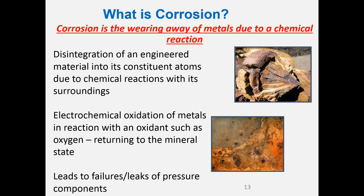So what is corrosion? It's the wearing away of metals due to a chemical reaction — the alloy trying to turn back into what it came out of the ground as, trying to turn back into an oxide due to reaction with its surroundings. It's an electrochemical process, normally involving oxidants such as oxygen, and this leads to failure because the metal loses mechanical strength and its mechanical properties.